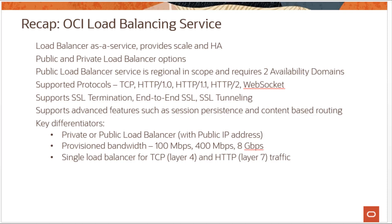Another nice feature is that you get a dedicated public IP address, so you don't have to worry about getting a CNAME to use this service. The listener listens on the service port on this assigned IP address, mapped to the user's OCI tenancy. The load balancer comes in three different shapes providing different levels of speed: 100 meg, 400 meg, and 8 gig.